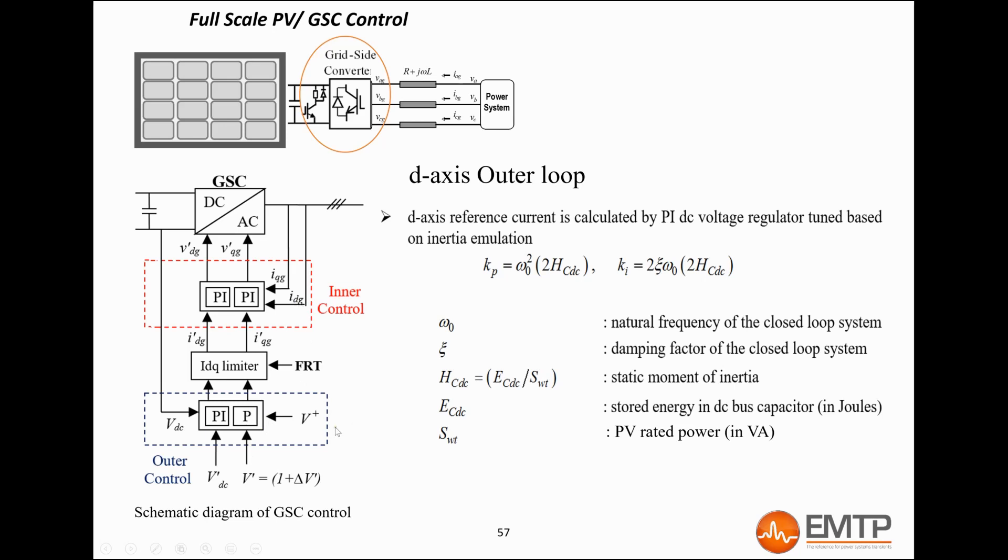Two level control loops are utilized. On the D-axis, the outer loop regulates the DC bus voltage to its reference value. The output of this loop is the D-axis current reference, which will be the reference for the inner loop.